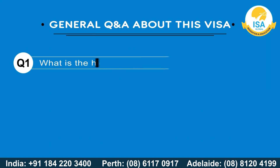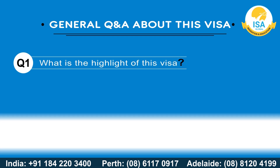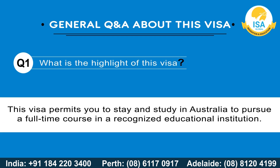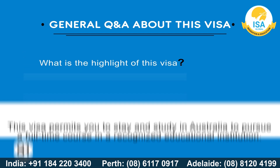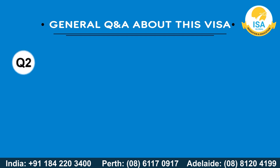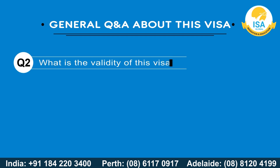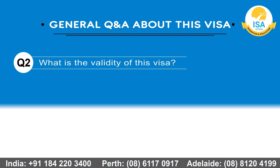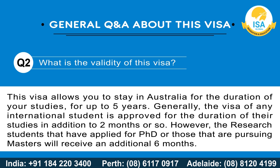What is the highlight of this visa? This visa permits you to stay and study in Australia to pursue a full-time course in a recognized educational institution. What is the validity of this visa? This visa allows you to stay in Australia for the duration of your studies, for up to five years.